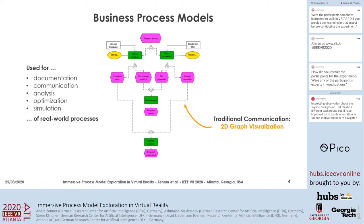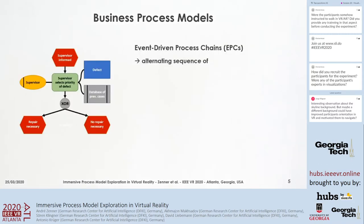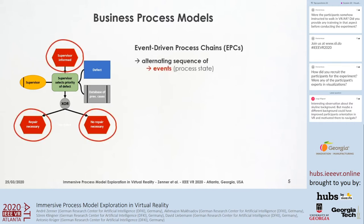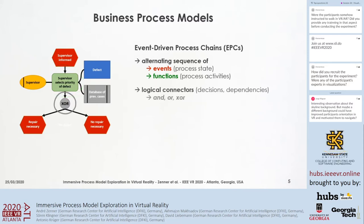Process models are formal representations of real-world processes typically used for the documentation and communication of real-world process knowledge. Traditionally, 2D graph visualizations of the underlying graph structure are used. Process models can be formalized in the format of event-driven process chains, short EPCs, which is a widely used format. EPCs are alternating sequences of event nodes that depict the process state and function nodes that depict process activities, and the process flow can be split or merged using logical connector nodes such as AND, OR, and EXOR nodes.